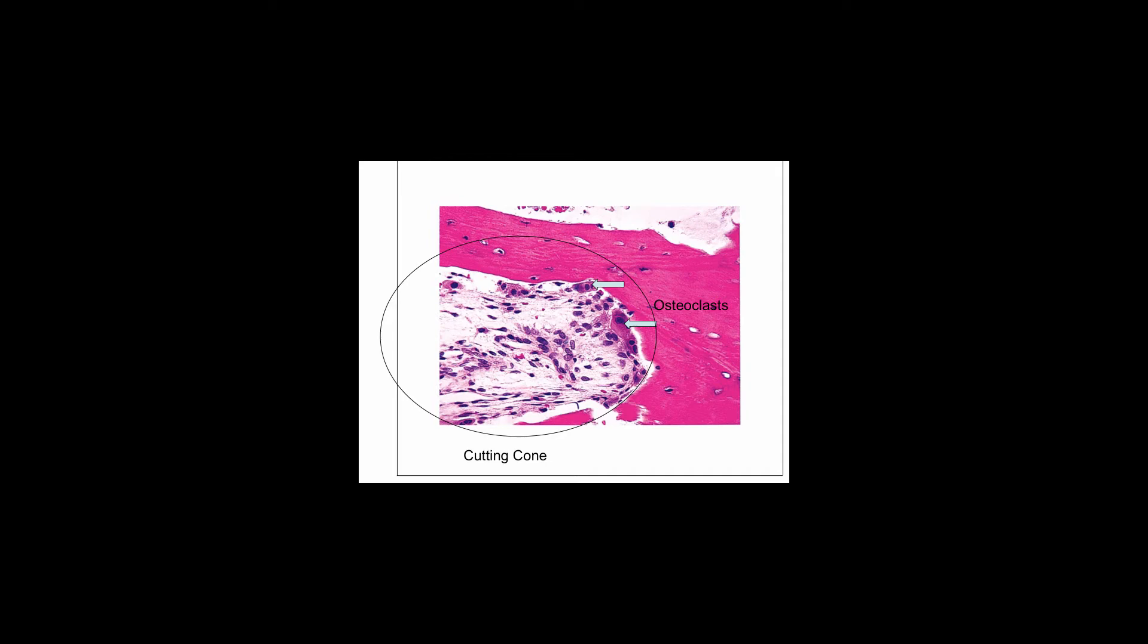After the work of the osteoclasts is completed, osteoblasts, which are derived from mesenchymal stem cells in the bone marrow, fill in the space with newly formed osteoid that becomes mineralized and becomes new bone. It takes more than 100 of these osteoblasts to fill in the space created by a single osteoclast.